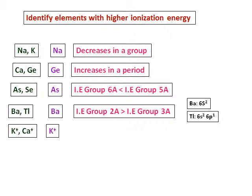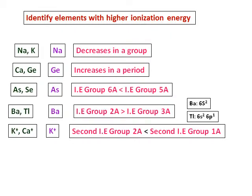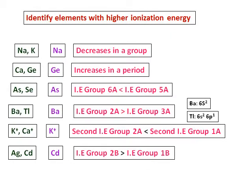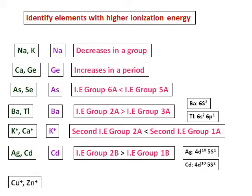Between K⁺ and Ca⁺, we are removing an electron from a positively charged ion, so this is the second ionization energy. K⁺ is stable after losing one electron, and hence removing one more electron from K⁺ requires more energy. Between silver and cadmium, cadmium will have higher ionization energy — another discrepancy where ionization energy of group 2B is greater than group 1B.